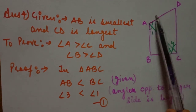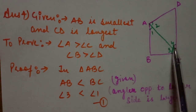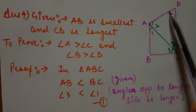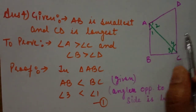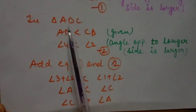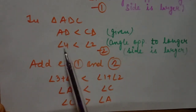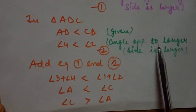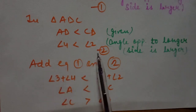Similarly in triangle ADC, we need the relation between angle 2 and angle 4. AD is opposite to angle 4 and CD is opposite to angle 2. Since CD is the longest side, AD is smaller than CD. In triangle ADC, AD is less than CD, so angle 4 is less than angle 2 — the angle opposite to the longer side is larger. This is equation 2.